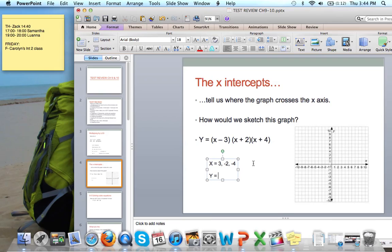Our y-intercept, we put 0 in for x. So 0 minus 3 is minus 3. Here we have 2. And positive 4. We multiply those all out. Negative 3 times 2, negative 6. Negative 6 times 4, negative 24. And we get our y-intercept of negative 24.